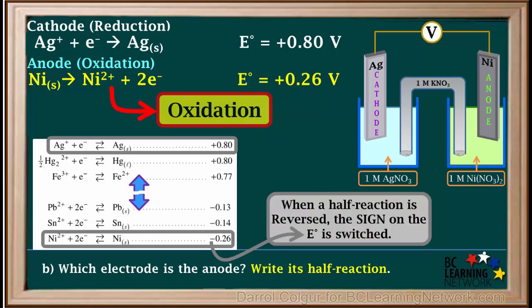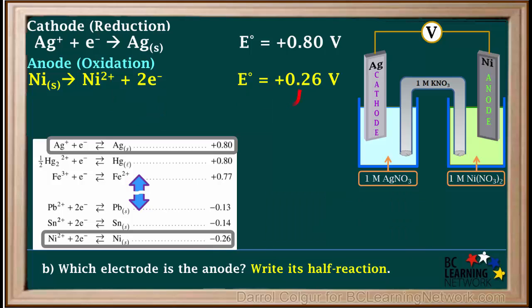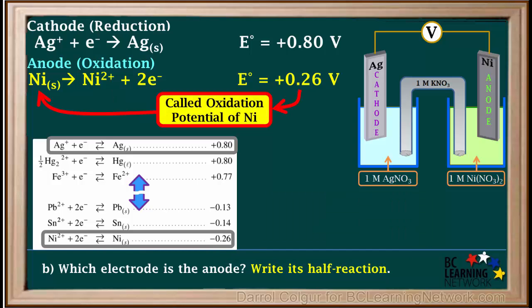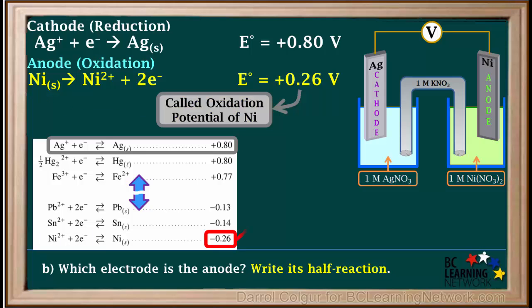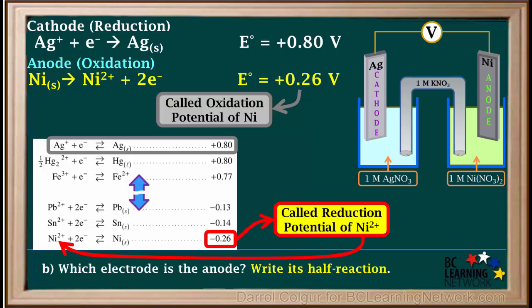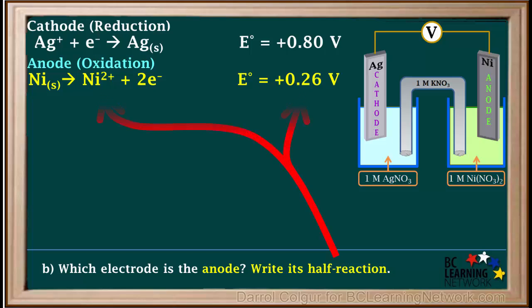Because the half reaction at the anode is oxidation, +0.26 volts is called the oxidation potential of nickel metal, whereas the −0.26 volts on the table is called the reduction potential of Ni²⁺. So now we have the half reaction at the anode along with its E⁰ value of 0.26 volts.